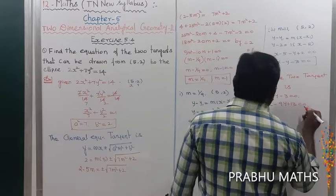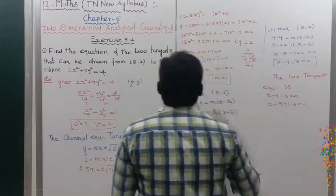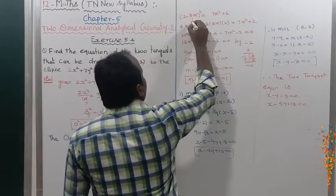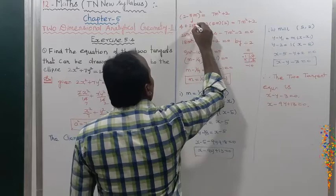Therefore, the two tangent equations are: x − y − 3 = 0 and x − 9y + 13 = 0.